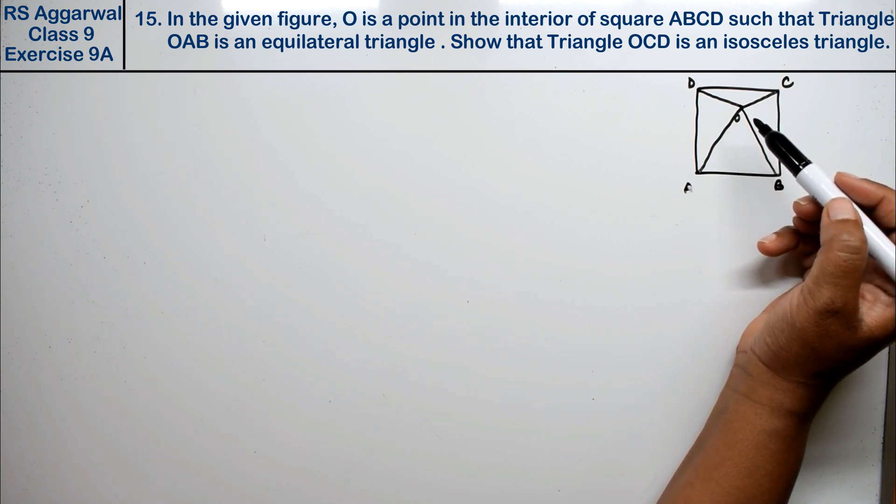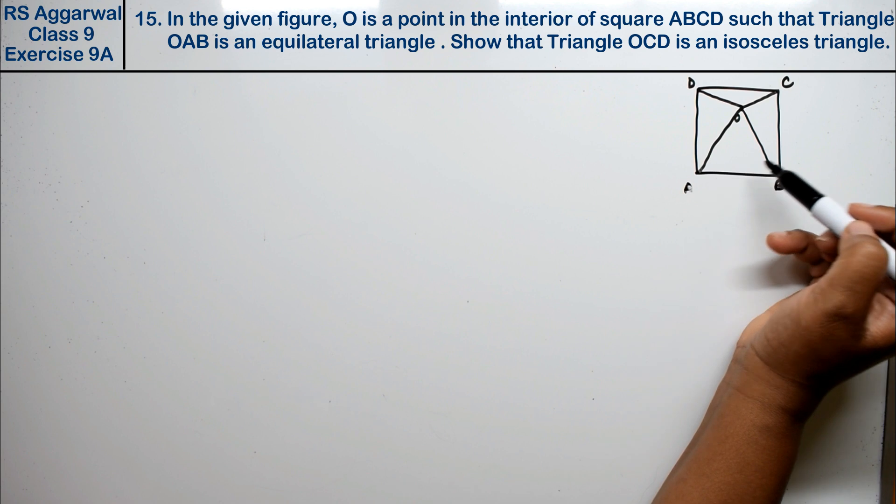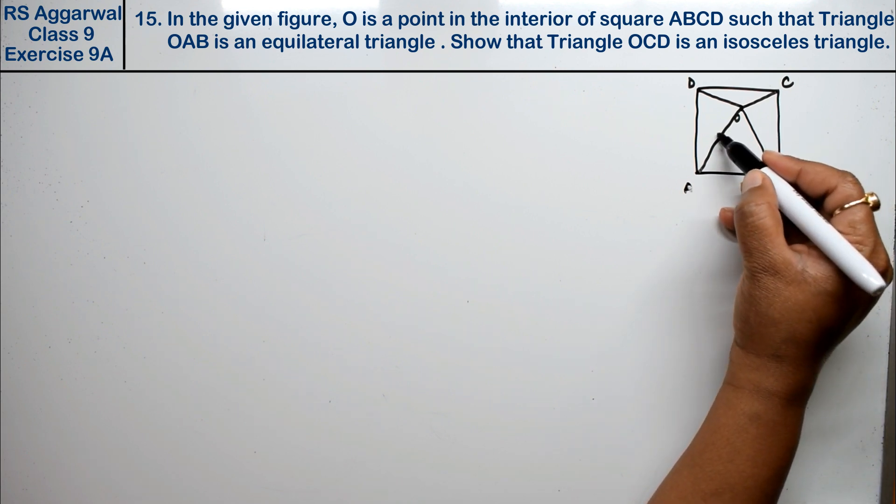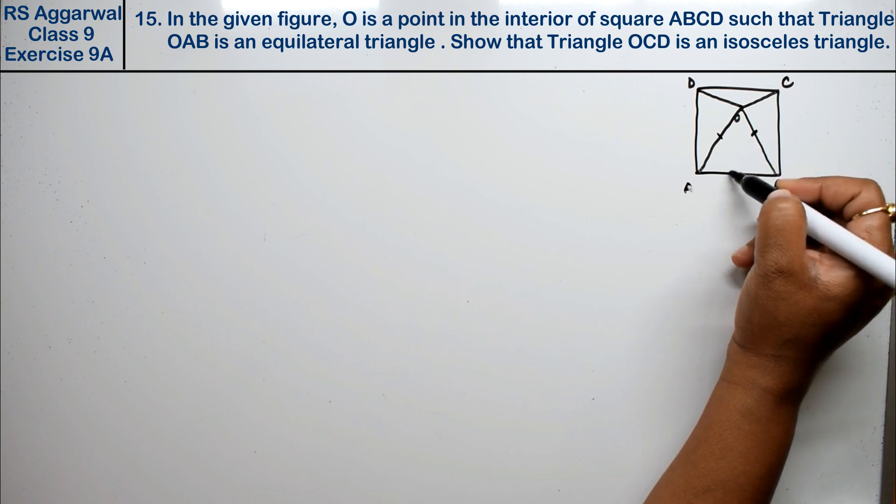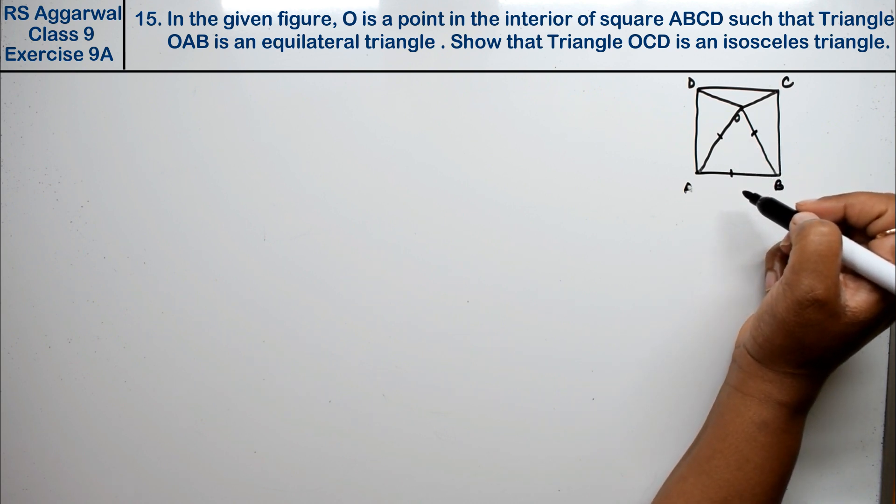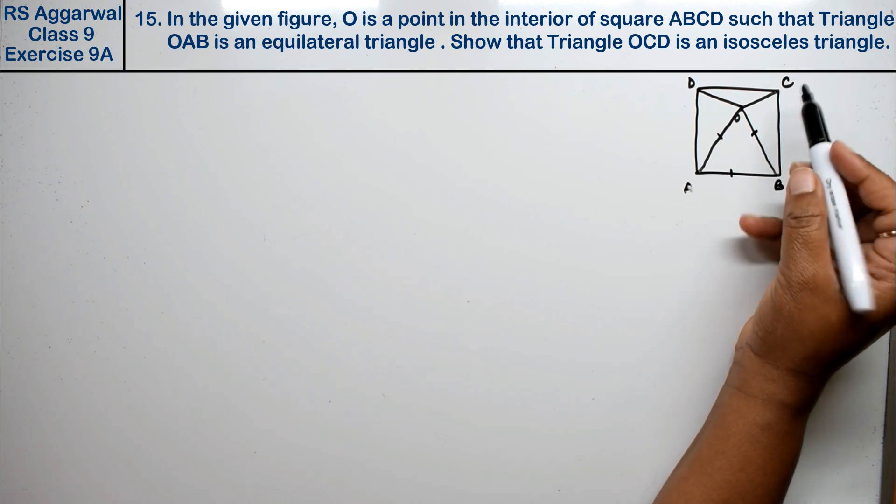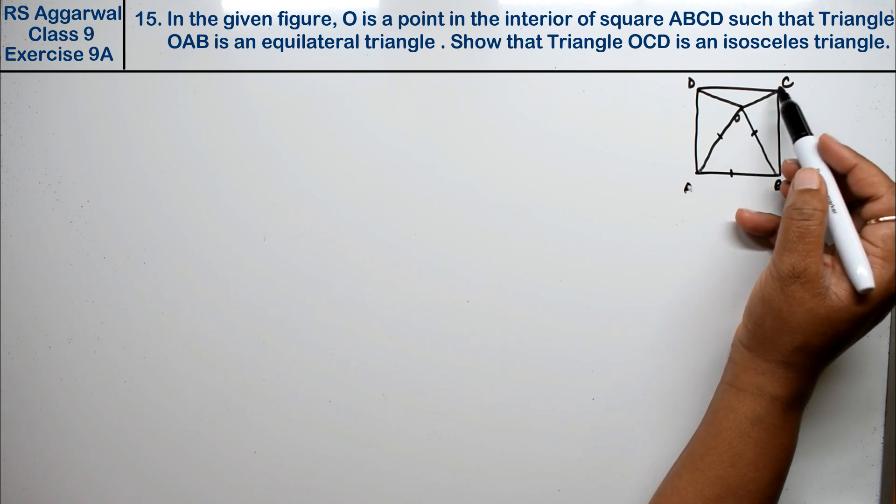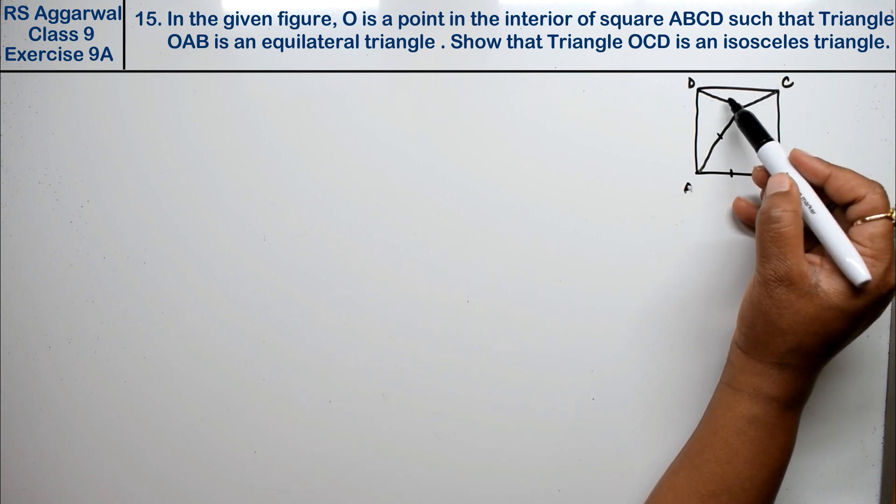Such that triangle OAB is an equilateral triangle, meaning all three sides are equal. We need to show that triangle OCD is an isosceles triangle.